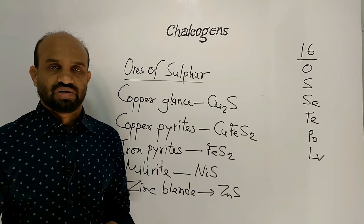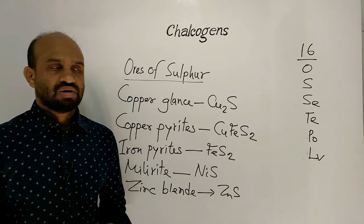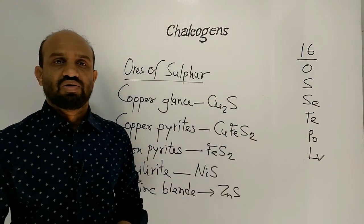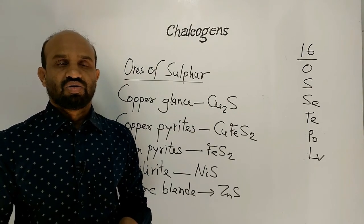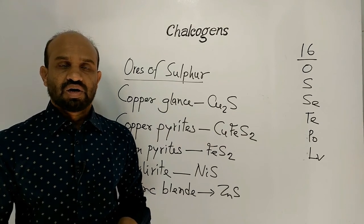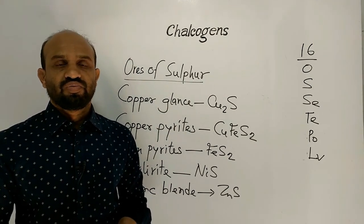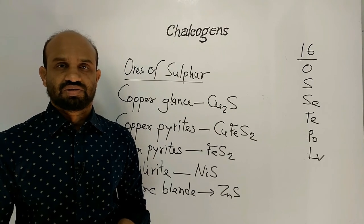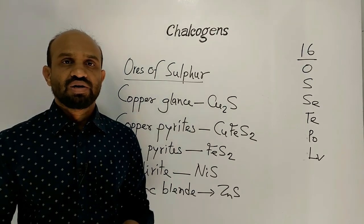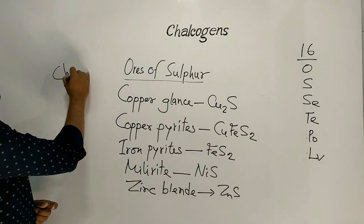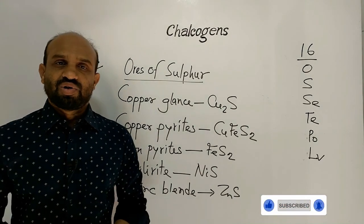In the ores of Oxygen and Sulfur, Selenium and Tellurium are also present on a limited scale. The elements of column 16 — Oxygen, Sulfur, Selenium, and Tellurium — are present in different ores. That is why these elements are called ore-forming elements, meaning Chalcogens. The word comes from the Greek word 'Chalcos,' meaning ores of copper. This is all about Chalcogens.